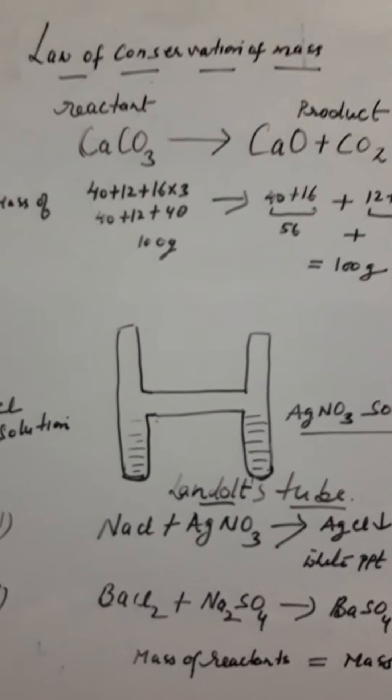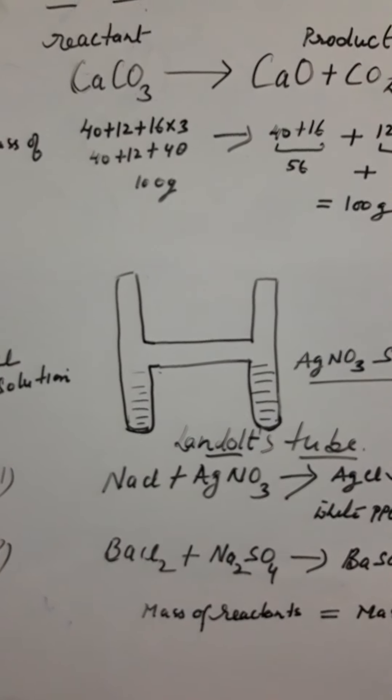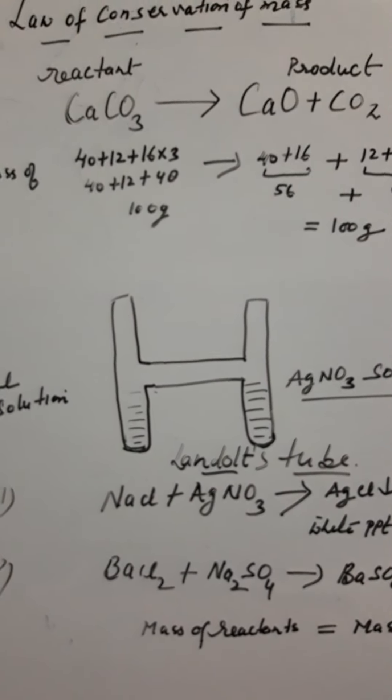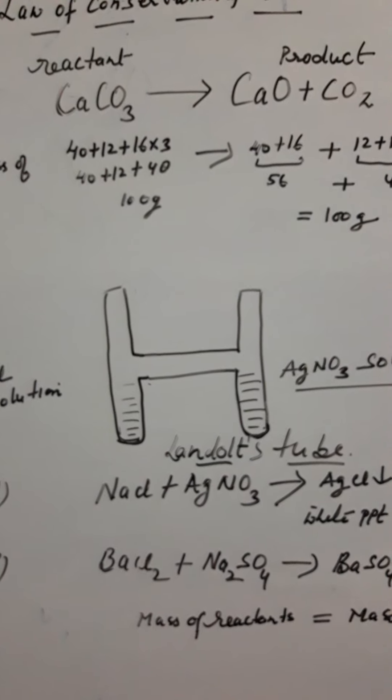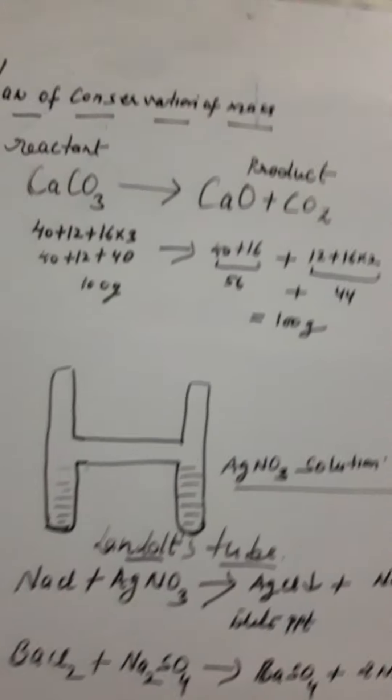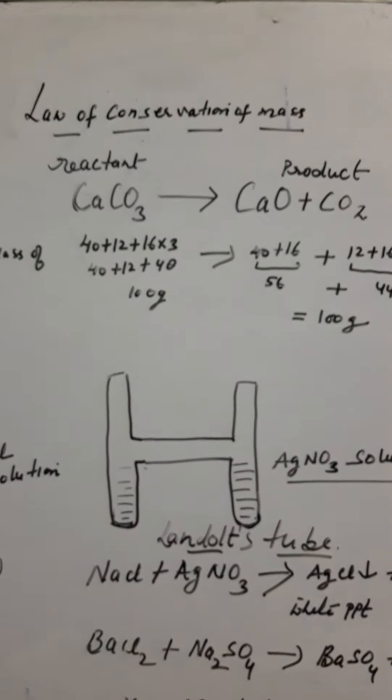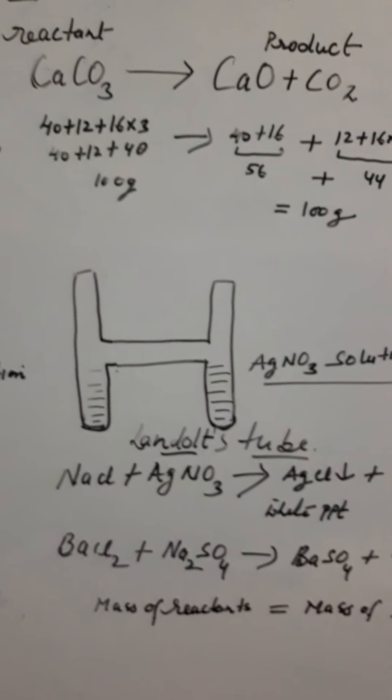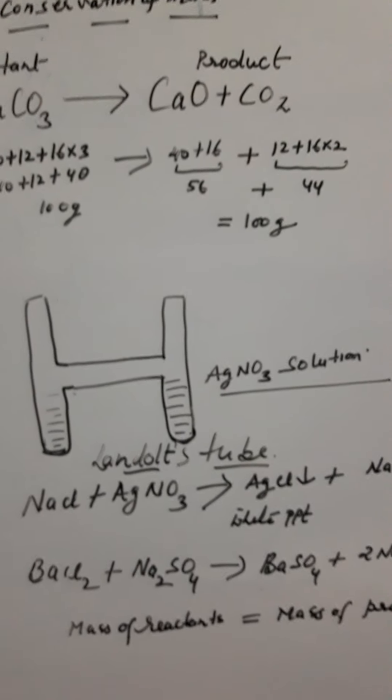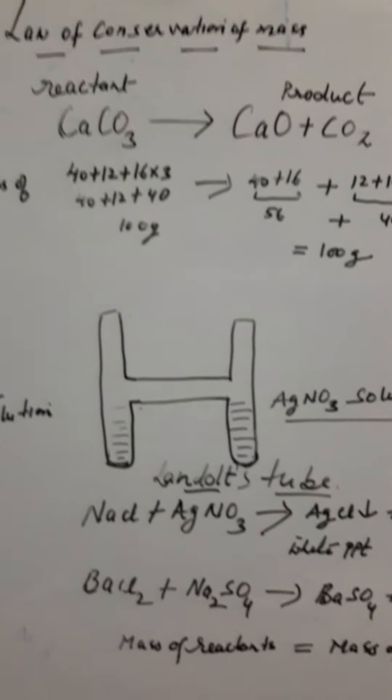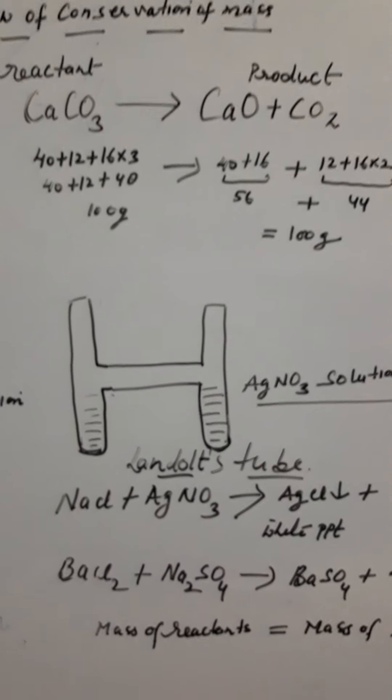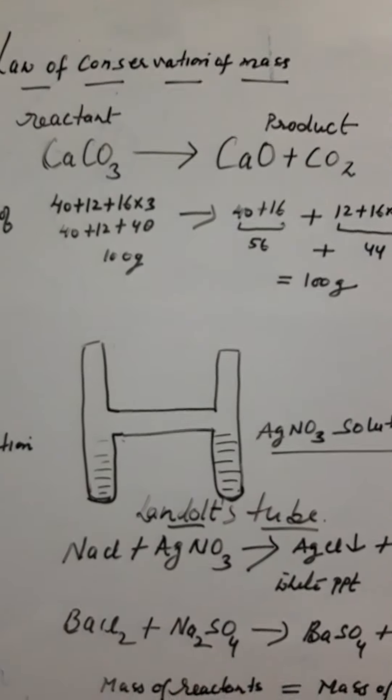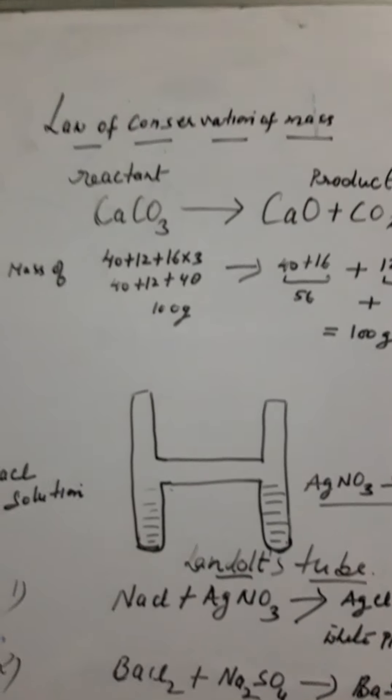During any change, matter is neither created nor destroyed, however it may change from one form to another. This is known as the law of conservation of mass. The total mass of reactants will be equal to the total mass of products, always. This law was given by Lavoisier. For example, we will take one example here.